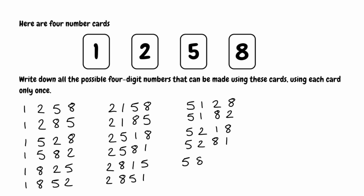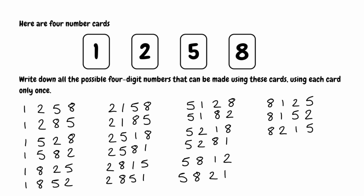For the last combinations with 5 at the front: 5, 8, 1, 2, and swapping the last two gives 5, 8, 2, 1. Finally, for numbers with 8 as the first digit: 8, 1, 2, 5; swapping gives 8, 1, 5, 2. Then 8, 2, 1, 5; swapping gives 8, 2, 5, 1. And lastly 8, 5, 1, 2; swapping gives 8, 5, 2, 1.